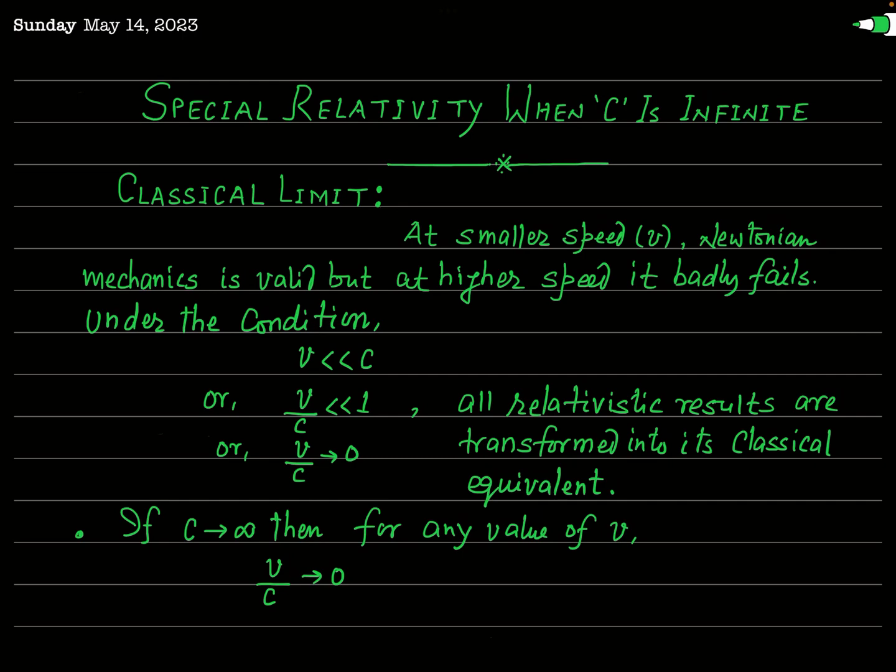Special relativity developed by Albert Einstein is based on the postulate that the speed of light in a vacuum is constant and finite — its value is 3 × 10⁸ meters per second. This theory introduces significant changes to our understanding of space and time, such as time dilation, length contraction, mass variation, and many more, when objects approach speeds close to the speed of light. All these things you have learnt in your course on special relativity.